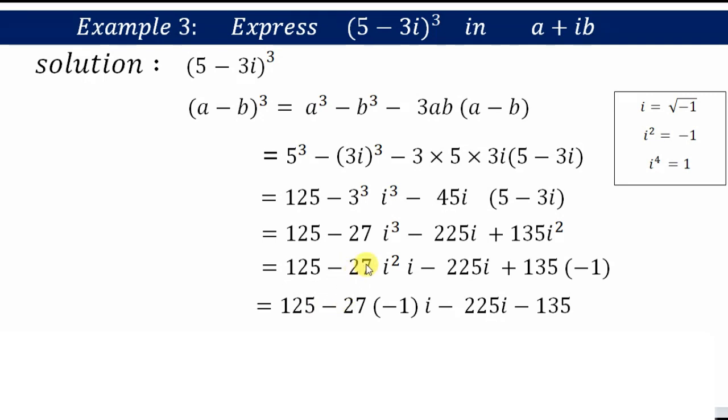So 125 minus 27i² is -1 and i, minus 225i—the plus and minus here becomes minus—and 135. So now the negative negative becomes positive: 125+27i-225i-135. So 125-135 is -10, and 27i-225i is 198i.